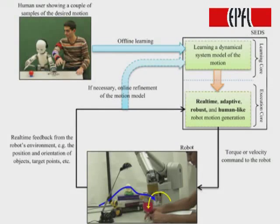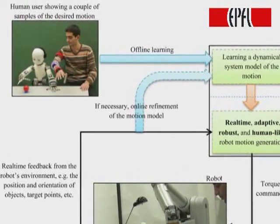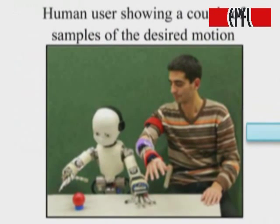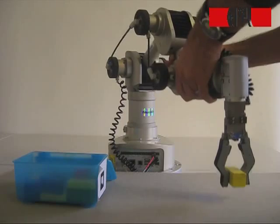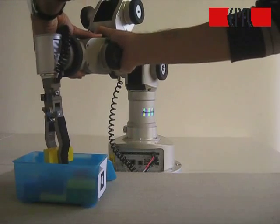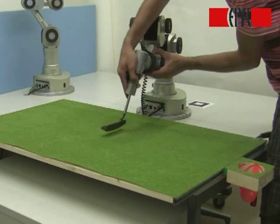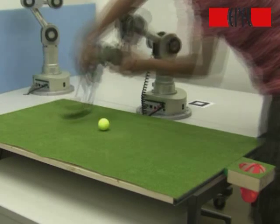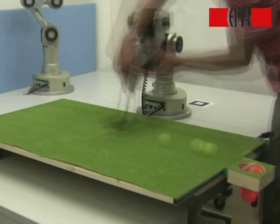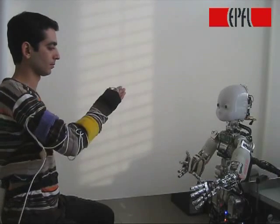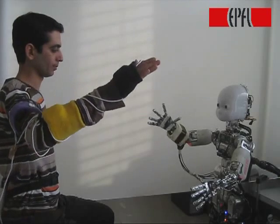You can see here a conceptual workflow describing how SEDS can be used. If you want your robot to do something for you, the first step is to teach it how to do that. This can be done easily just by, for example, back-driving your robot. In order to get good performance, you should show your robot a couple of demonstrations from different positions. You could also teach your task by teleoperating the robot if kinesthetic teaching is not possible.